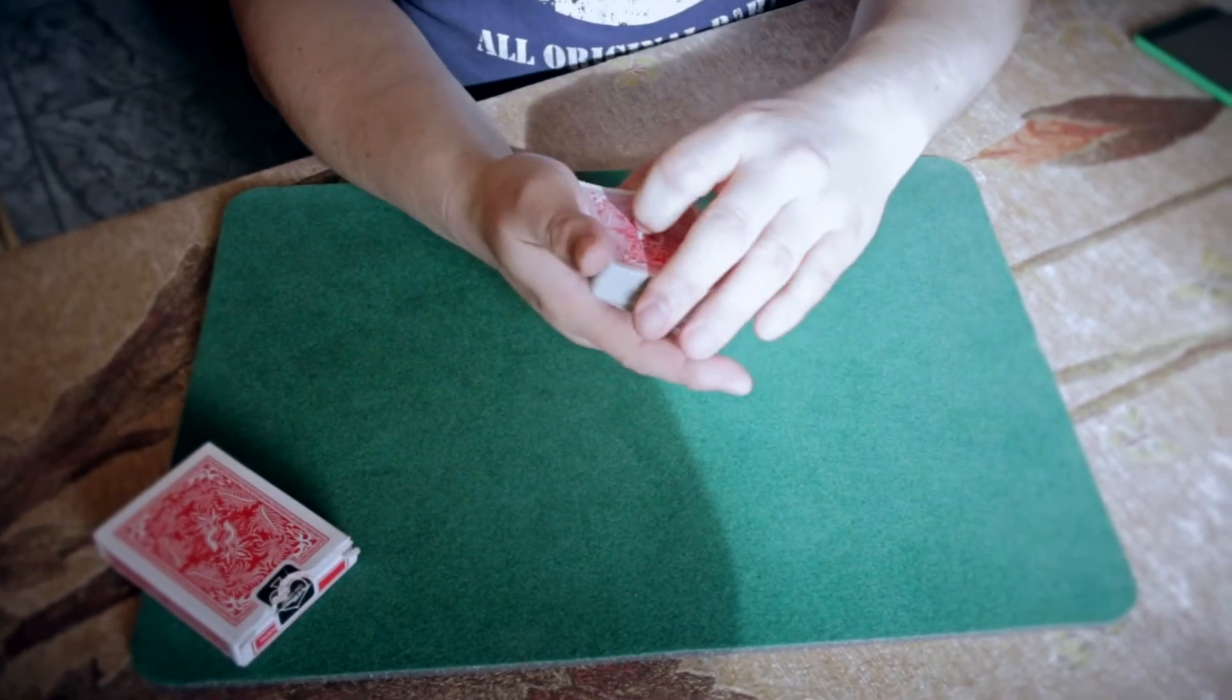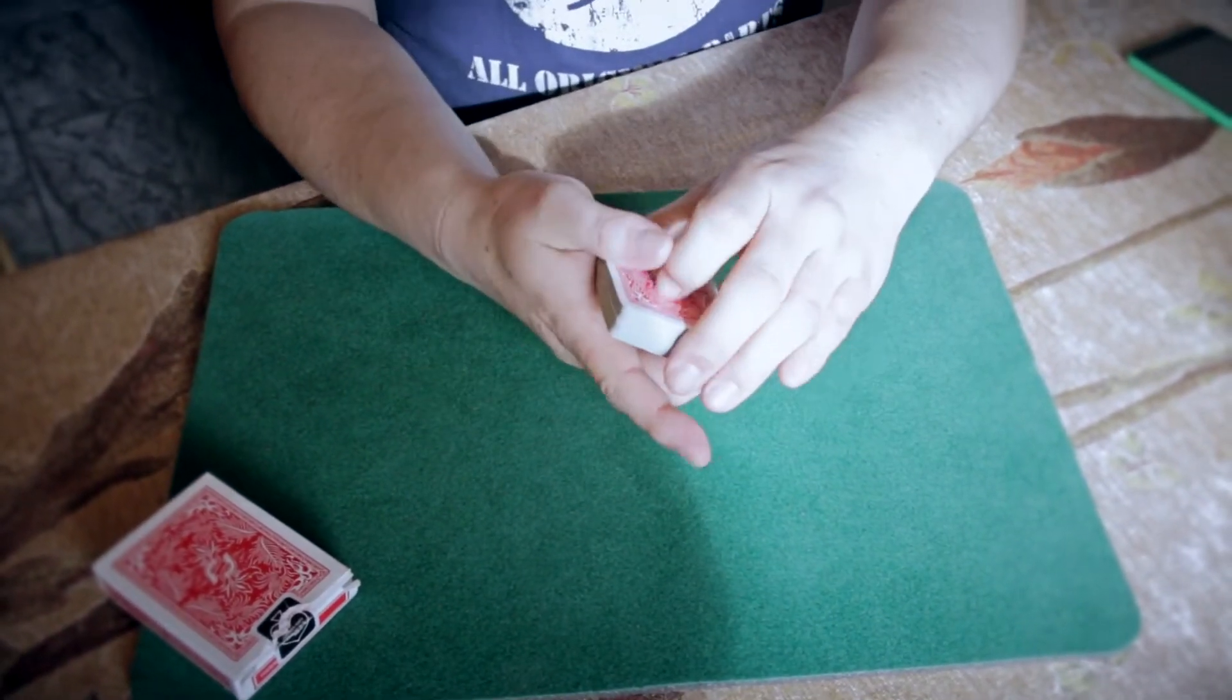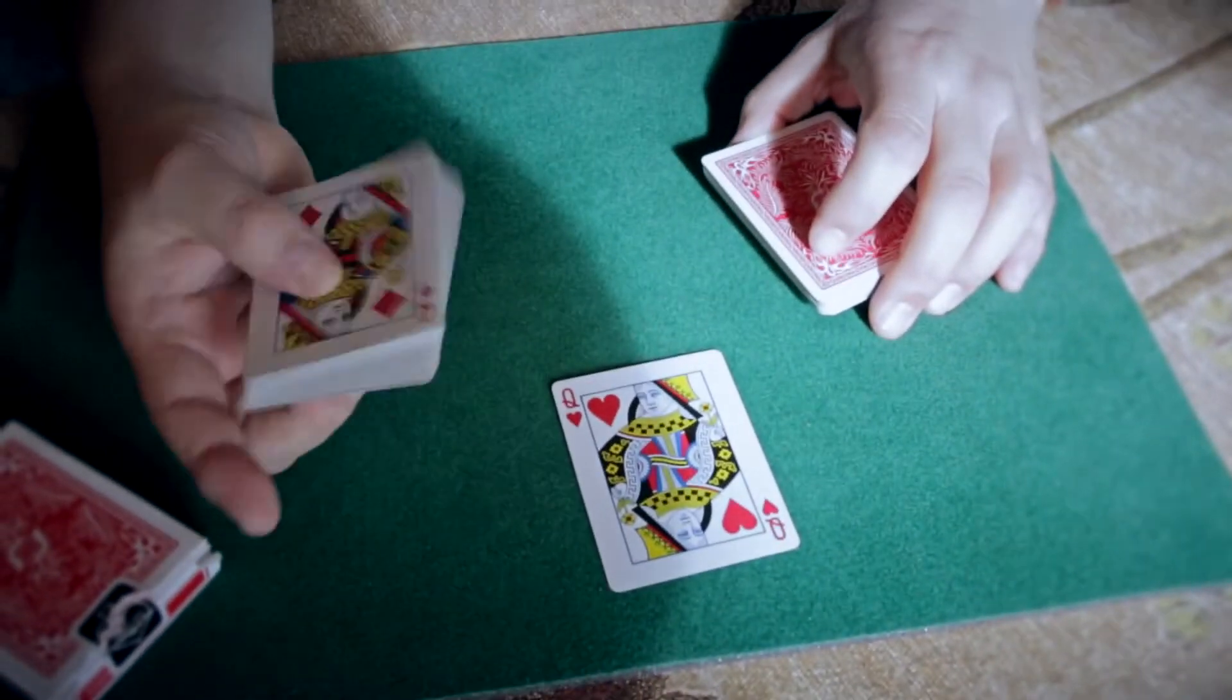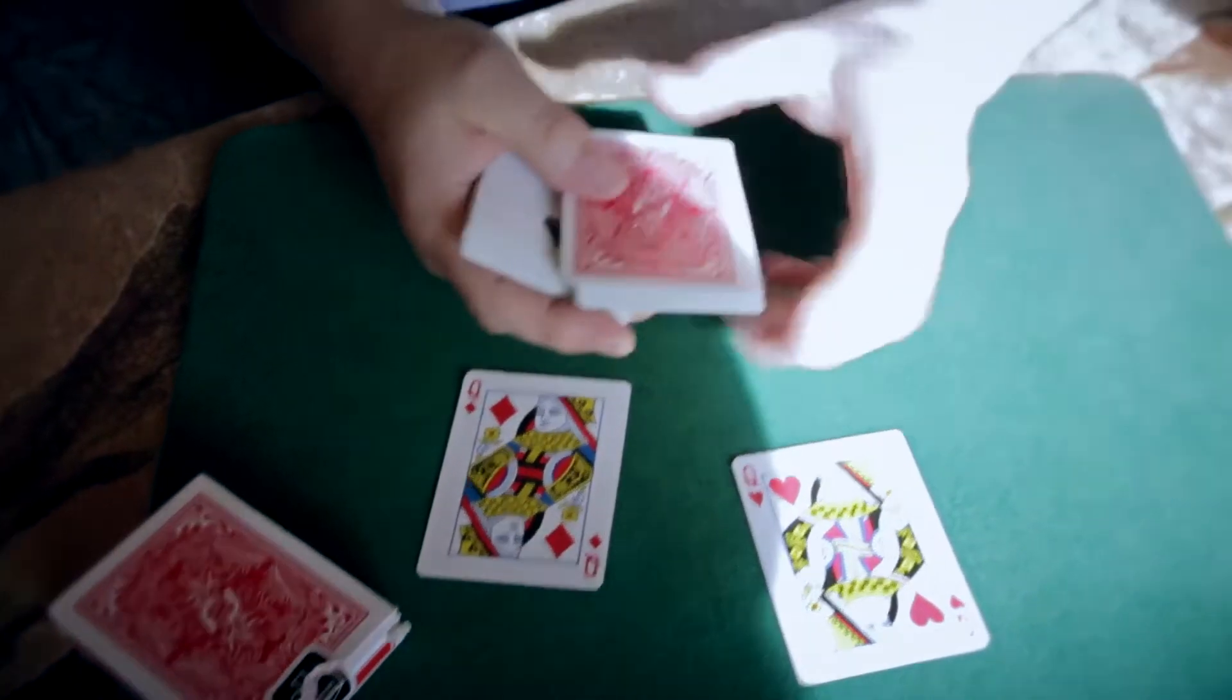After you've done that, you give the cards a few cuts. Hopefully if we've done something right, we should have found... ah, that's a good card, that's a red queen. There's another red queen there.